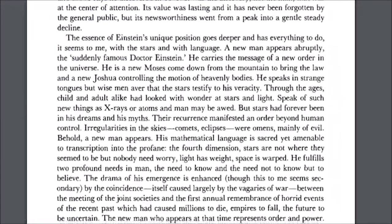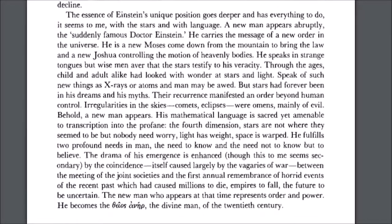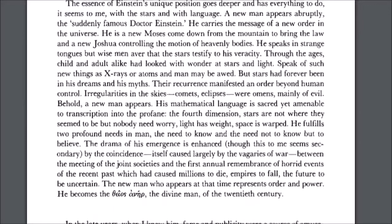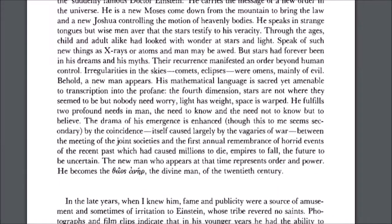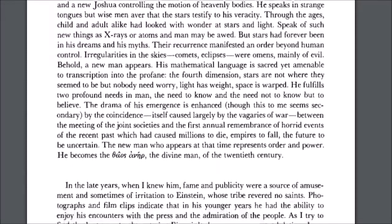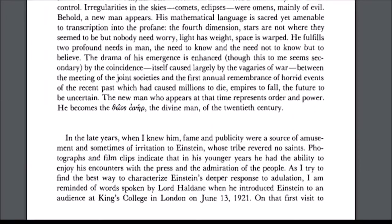A new man appears abruptly, the suddenly famous Dr. Einstein. He carries the message of a new order of the universe. He is a new Moses come down from the mountain to bring a new law, and a new Joshua controlling the motion of the heavenly bodies. The new man who appears at the time represents order and power. He becomes the Theos Aner, the divine man of the 20th century.